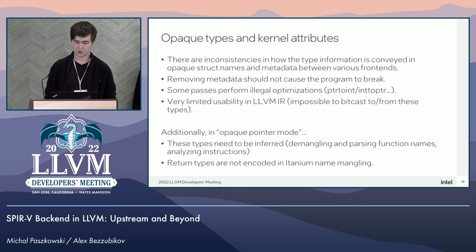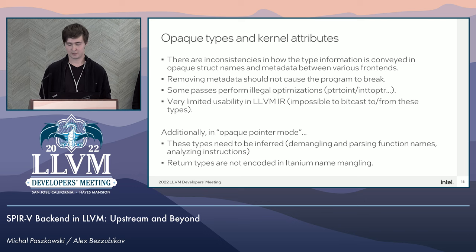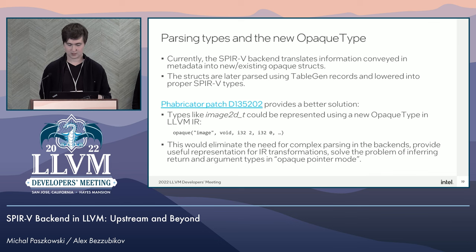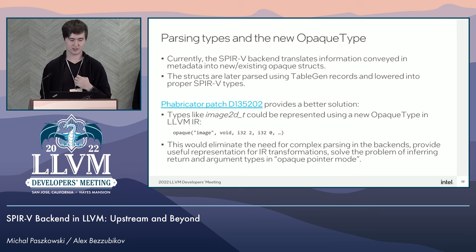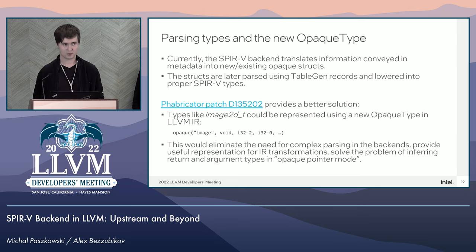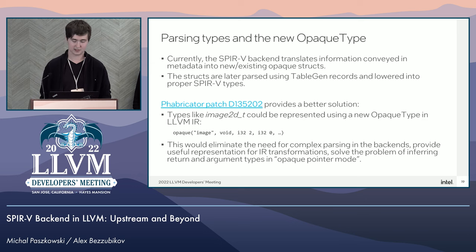Additionally, in the opaque pointer mode, the types need to be inferred by parsing the mangled function names, which unfortunately do not contain any information on return types. Our current solution in the backend tries to remedy all of these problems — any type information in the metadata is first translated into new or existing opaque structs, we track duplicates, their names are later parsed using TableGen records, and the structs are lowered into proper SPIR-V types.